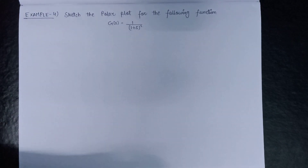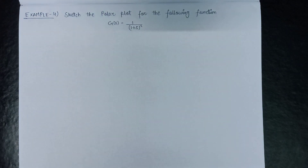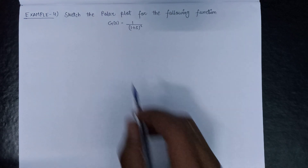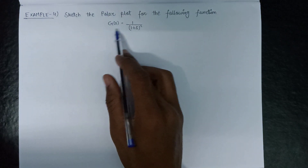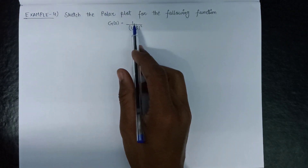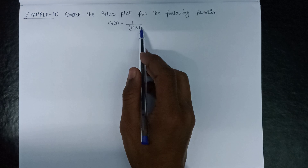Welcome all. In this lecture, we are going to solve one more example, that is example number 4: sketch the polar plot for the following transfer function, which is given as G(s) = 1/(1 + s²).